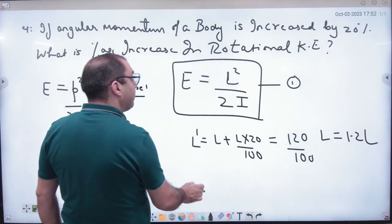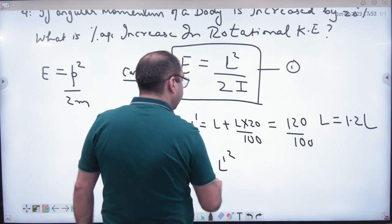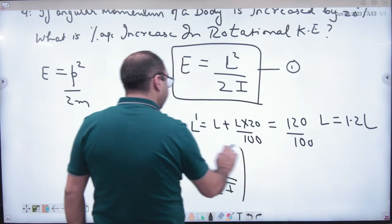What is L' value? 1.2L. So what is E' value? L' square divided by 2I. Equation number two.